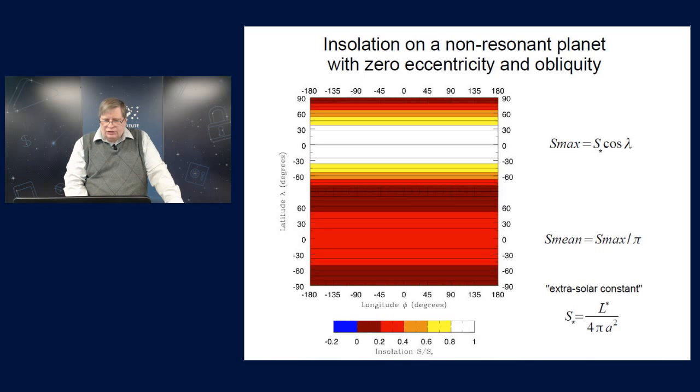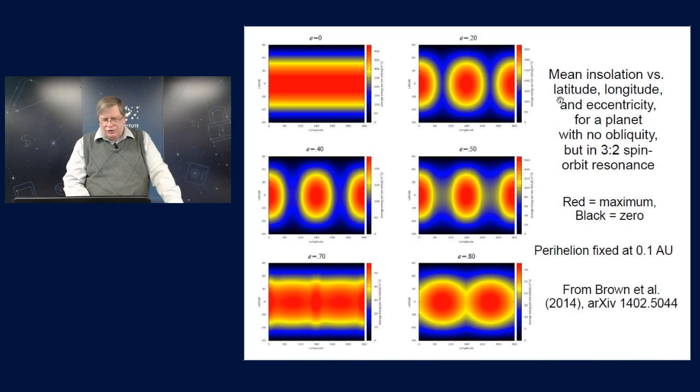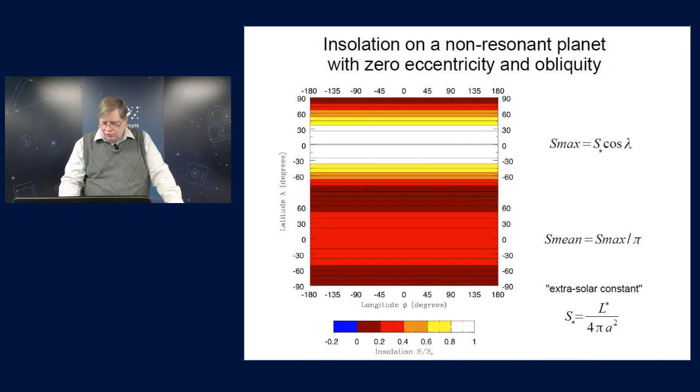So I've drawn this kind of map of the insolation across the planet as a function of latitude and longitude. And I've shown the maximum insolation across the surface and its mean over time. The maximum insolation peaks at the equator, and its peak value is just what I call the extrasolar constant, analogous to the solar constant on Earth. It's the star's luminosity divided by 4 pi times the square of the semi-major axis.